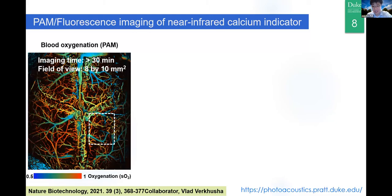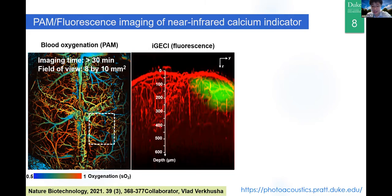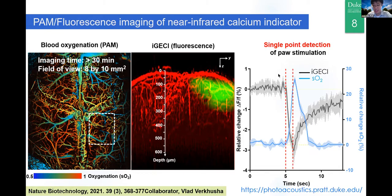We have been working on brain imaging as well. We can look at mouse brain vasculature with hemoglobin oxygenation of the blood very clearly over an 8 by 10 millimeter field of view, but imaging speed is about 30 minutes — very long. We can combine this with fluorescence imaging of a genetically encoded calcium indicator in the near-infrared version, looking at hemodynamics and calcium signal simultaneously. But for dynamics like paw stimulation response, we cannot do a very big field of view — we have to focus on a single spot.